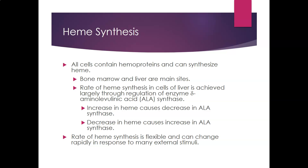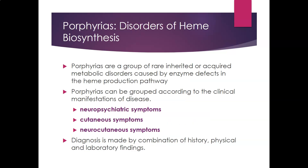The porphyrias are a group of rare inherited or acquired metabolic disorders caused by an enzyme defect in the heme production pathway. They can be grouped according to clinical manifestation: some present with neuropsychiatric symptoms, some with cutaneous symptoms, and some with both neurocutaneous symptoms.